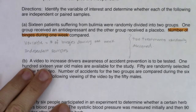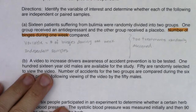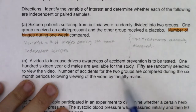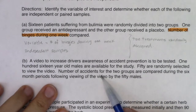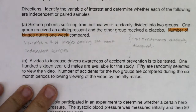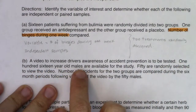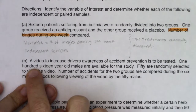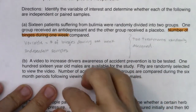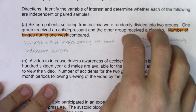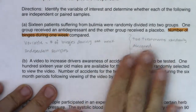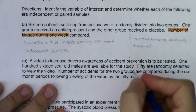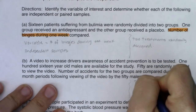Setup B: A video to increase driver awareness of accident prevention is to be tested. 100 sixteen-year-old males are available for the study. 50 are randomly selected to view the video. The number of accidents for the two groups are compared during the six-month period following viewing of the video. Two treatments are randomly assigned — 50 watch the video, 50 do not.